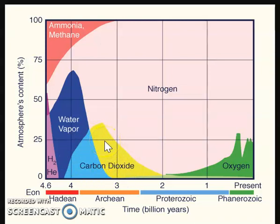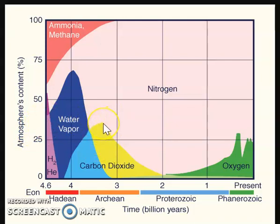If we had more carbon dioxide in the atmosphere, it would actually retain more heat and our planet would be too hot to be livable. So that 20 to 30 percent carbon dioxide where it peaked would create a very, very hot atmosphere, and we would not be able to survive.